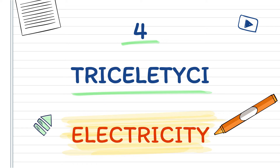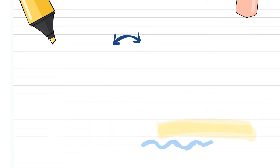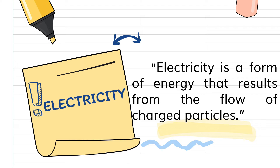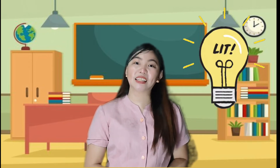What is electricity? Very good! Electricity is a form of energy that results from the flow of charged particles. Electricity is a basic part of nature and it is one of our most widely used forms of energy. The moment we woke up, we usually checked our mobile phones for notifications from our social media. We even use it as our alarm clock. In the evening, we use light to see clearly. In fact, we are surrounded with devices and machines that function with the use of electricity.